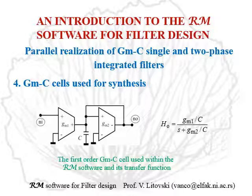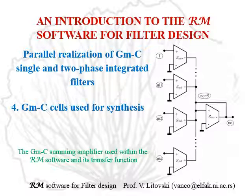Here is the first-order cell, which is an operational transconductance amplifier loaded by an RC circuit, where the R is simulated by a negative impedance via a transconductor. Here is the summing amplifier, in which the sign of the transconductance may be changed by interchanging the input terminals of any single amplifier within the summation, so that one can accommodate the sign of the system.